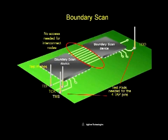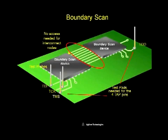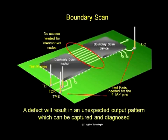No access is required for the interconnect nodes. Together with TCK and TMS, the input patterns are driven into TDI. The resulting output patterns are then captured at TDO. A defect will result in an unexpected output pattern which can be captured and diagnosed.